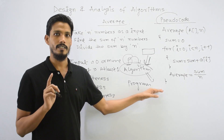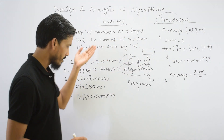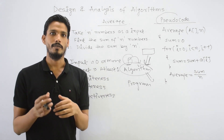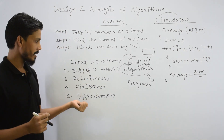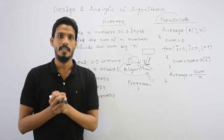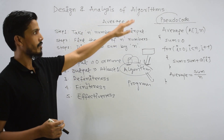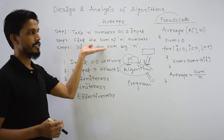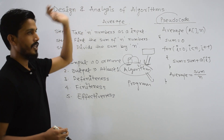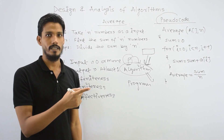So this was the basic content — the definition of the algorithm, pseudocode, and the properties. If there is any doubt, you can mention it in the comments section. Now we will start the next video on the topic of design and analysis of algorithms. We will write algorithms in simple plain English or pseudocode, then analyze the algorithm, and understand why we need algorithm analysis. We will see that in the next video.